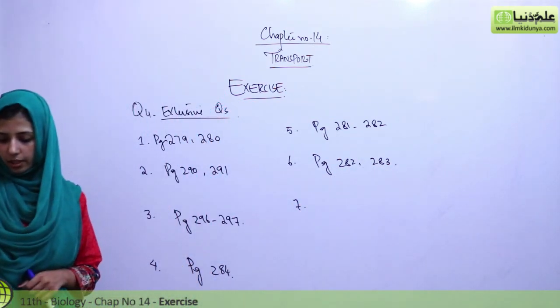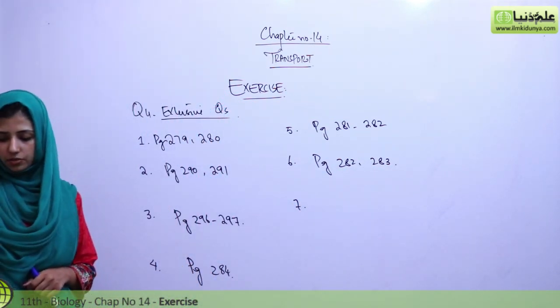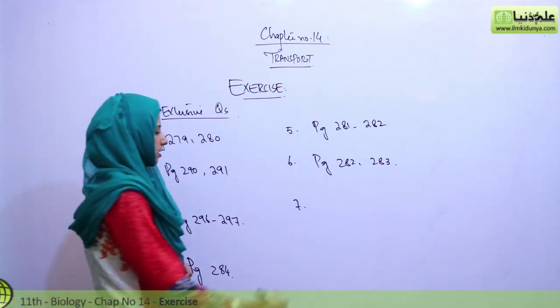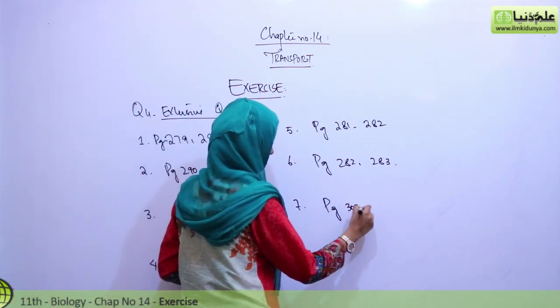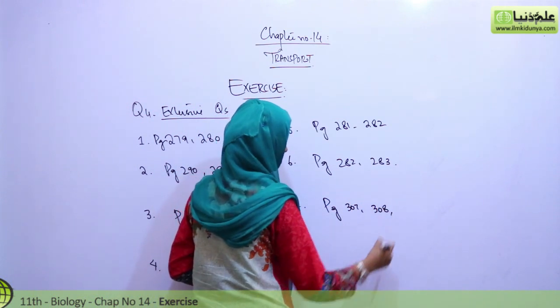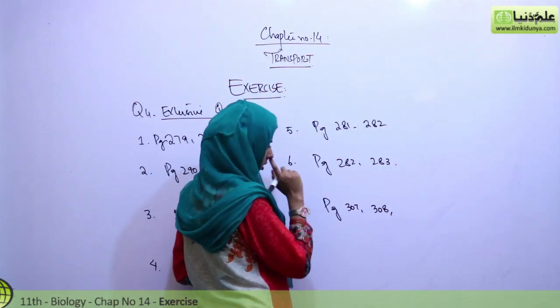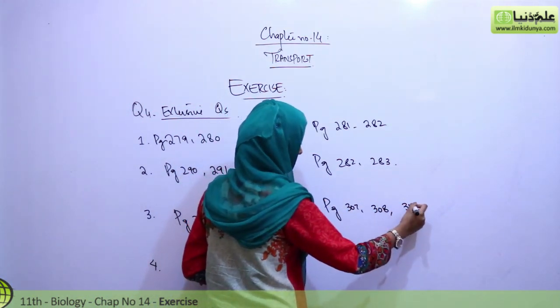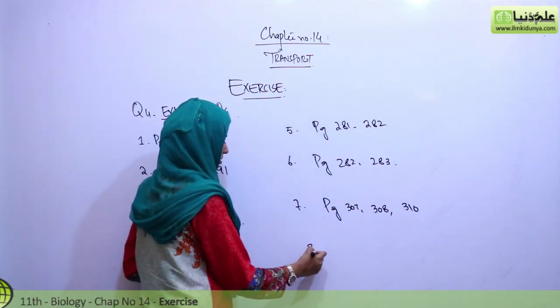Seventh question, name and describe general functions of the three major types of blood cells. This is on page 307, 308. There's a chart on 309 you can reference, and then further explanations on page 310.